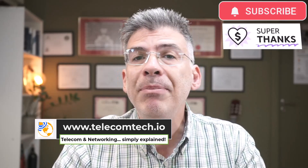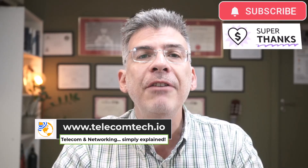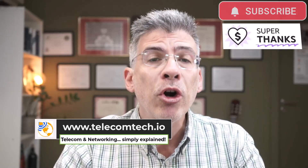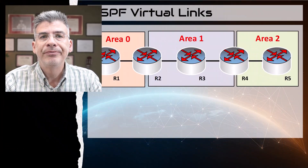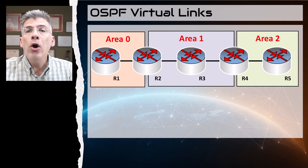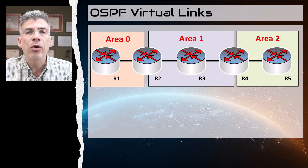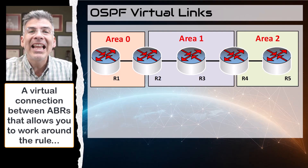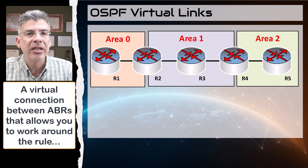This rule can be restrictive, especially if you're in the process of migrating or merging multiple networks. You might find it difficult to follow that rule as you make your network changes. In order to facilitate such changes, OSPF can use what is known as a virtual link, which is essentially a link between ABRs that allows you to work around this rule.